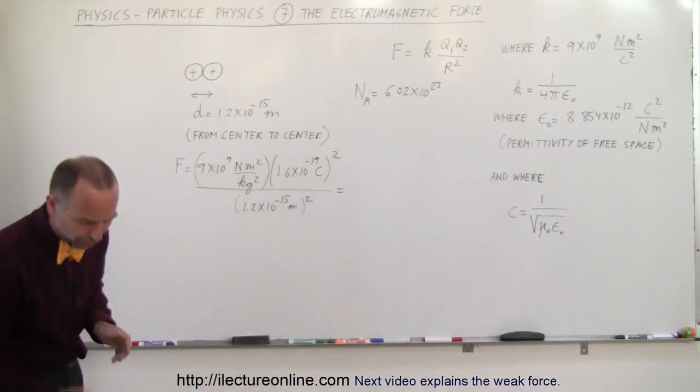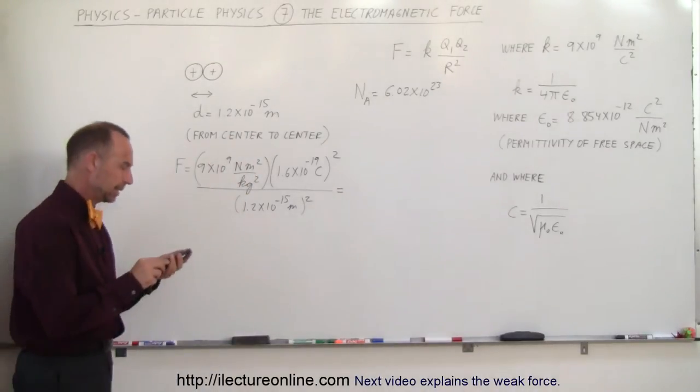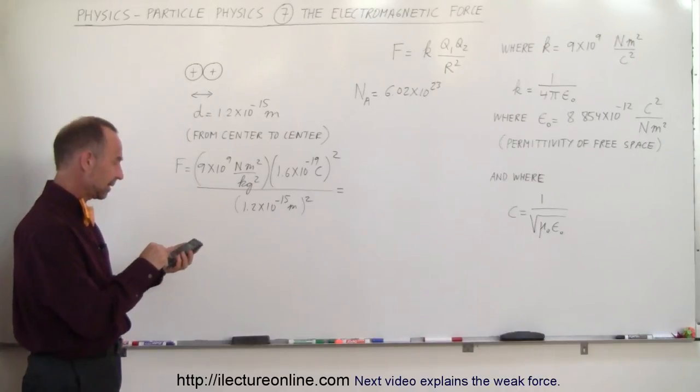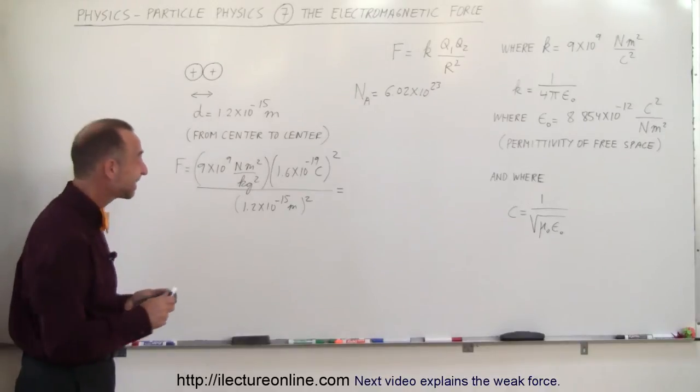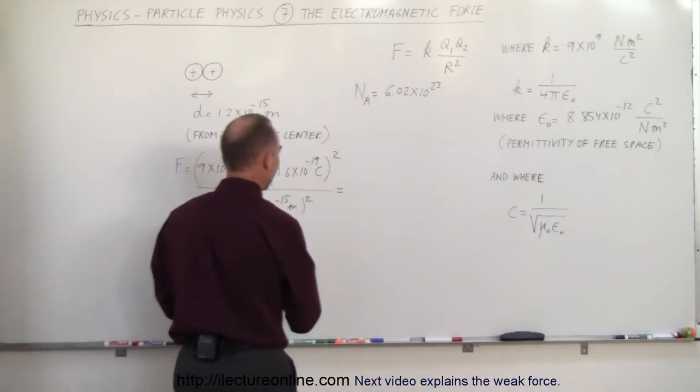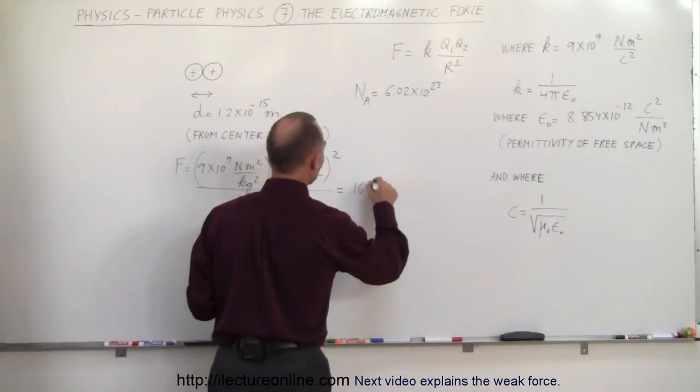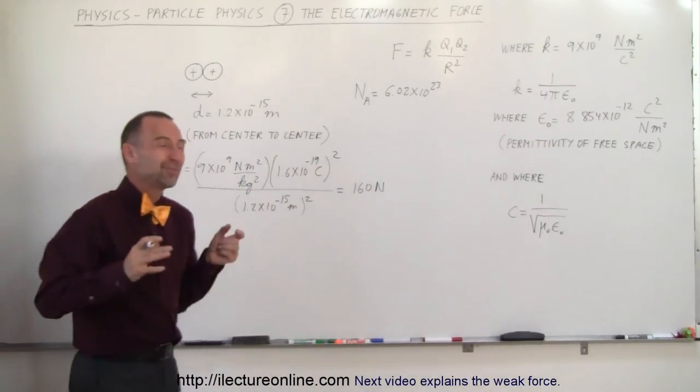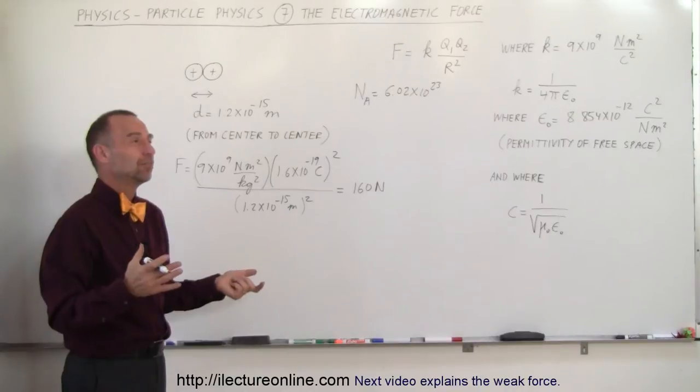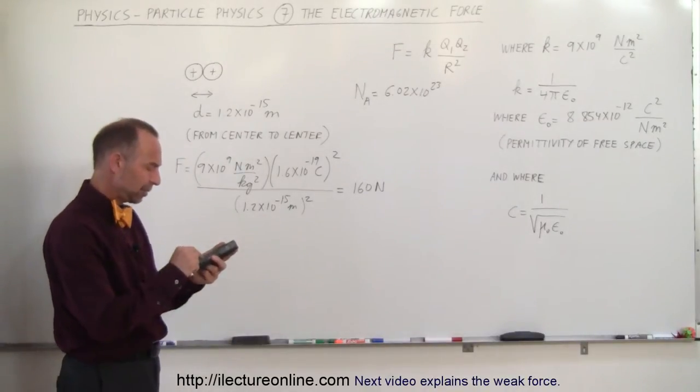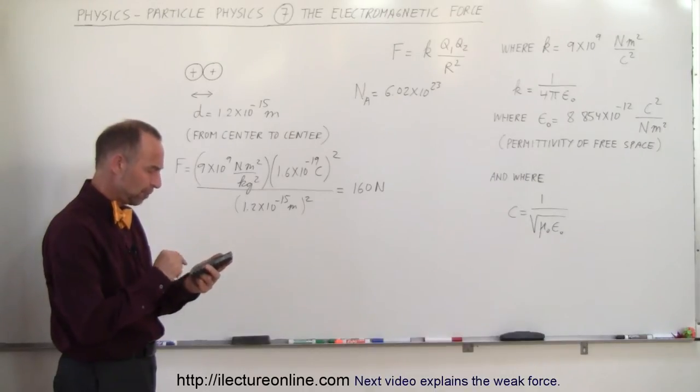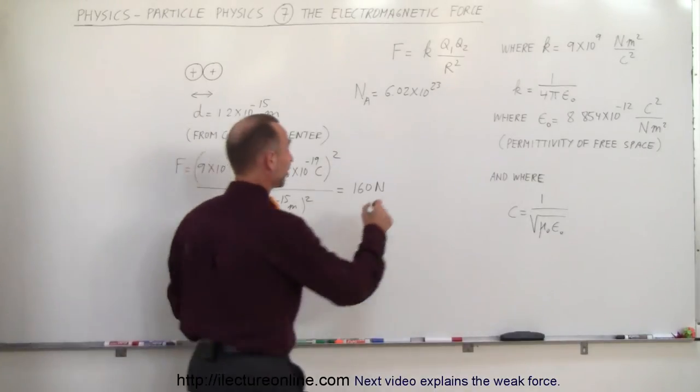So let's see what is the force between two protons. We have 9e to the 9th times 1.6e to the minus 19 squared, divided by 1.2e to the minus 15 squared. And that's 160 newtons. Imagine that, 160 newtons. For those who are not familiar with what 160 newtons is, let's convert that to pounds. You have to divide by 9.8 and multiply times 2.2, and we get about 36 pounds of force.